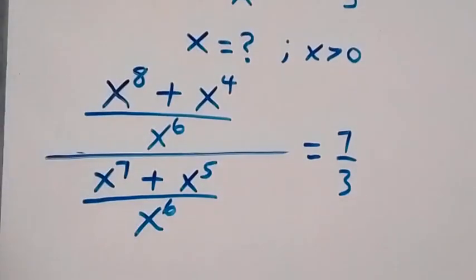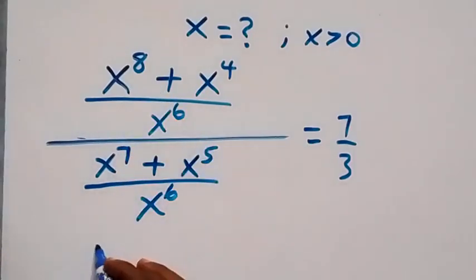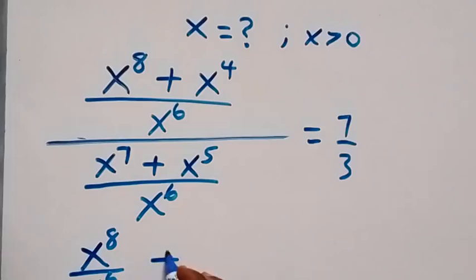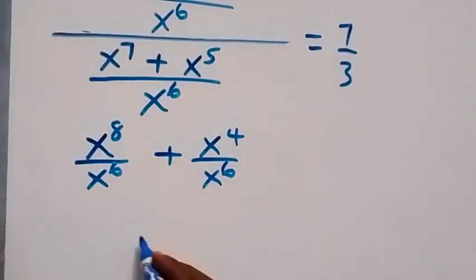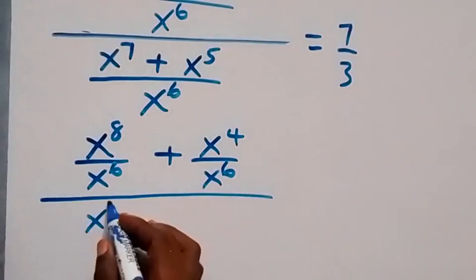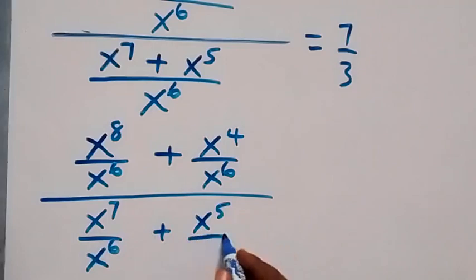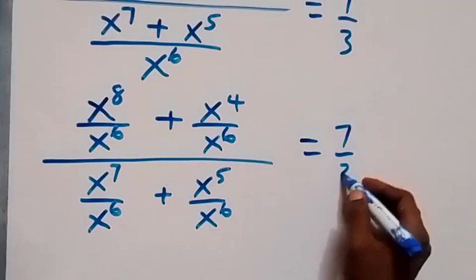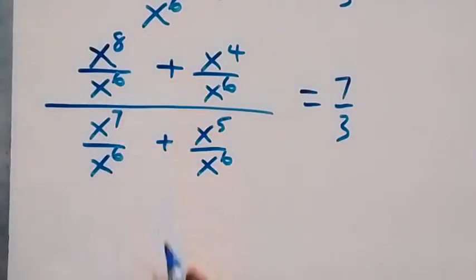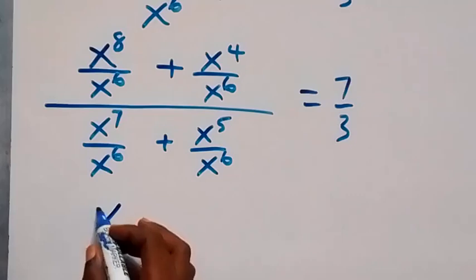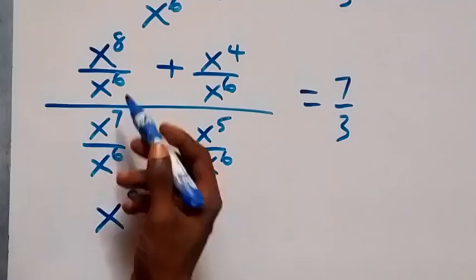In the next step we can separate this fraction. This will be x raised to power 8 divided by x raised to power 6, then plus x raised to power 4 divided by x raised to power 6, all over x raised to power 7 divided by x raised to power 6, plus x raised to power 5 divided by x raised to power 6, equals to 7 over 3. Applying the law of indices, we can write this as x raised to power 8 minus 6.